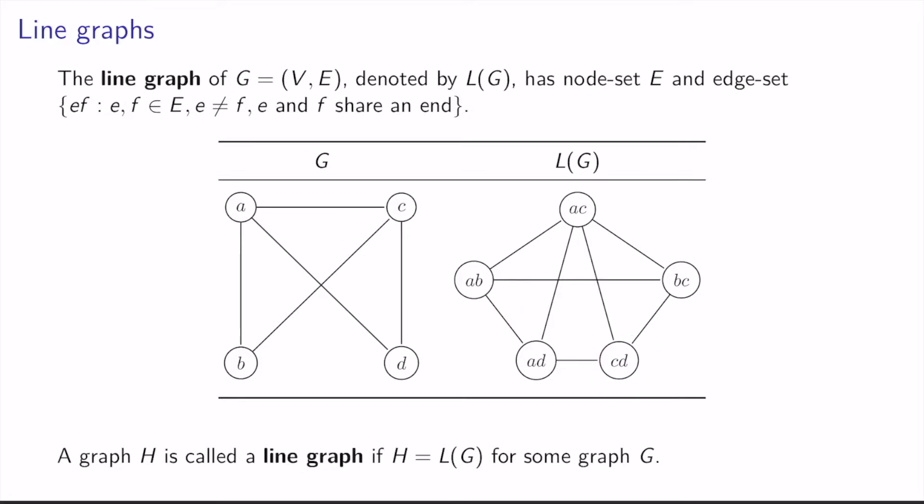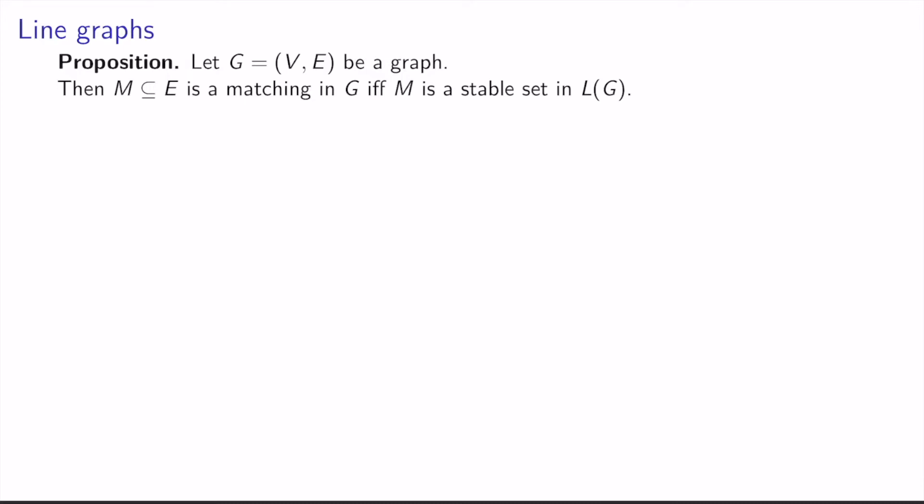A graph H is called a line graph if H equals L(G) for some graph G. For example, this graph here is a line graph. We have the following result: let G be a graph with node set V and edge set E. Then a subset of edges M is a matching in G if and only if M is a stable set in the line graph of G.